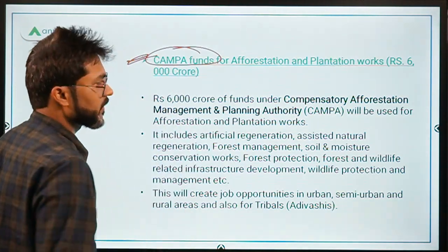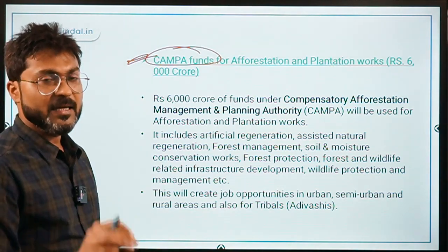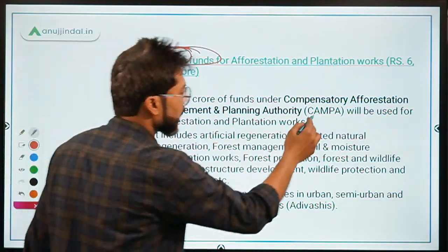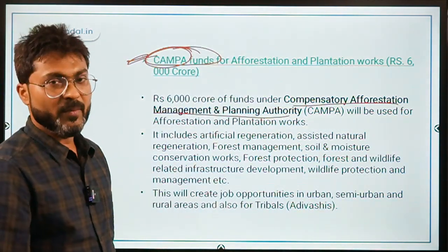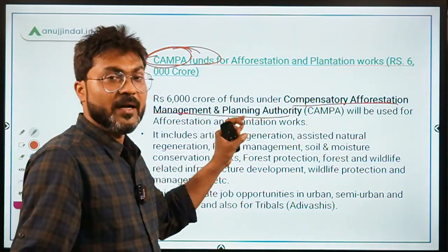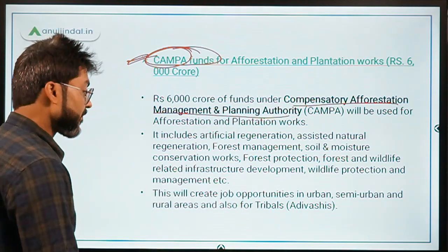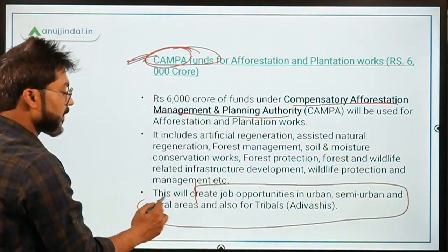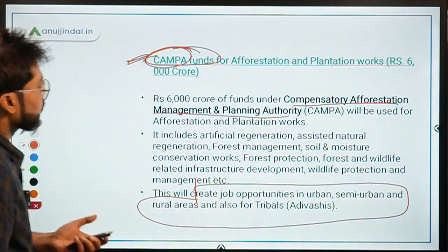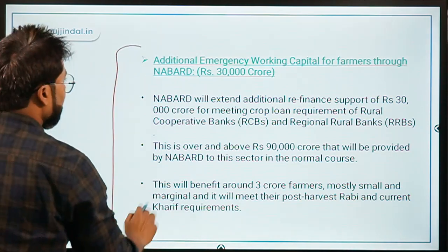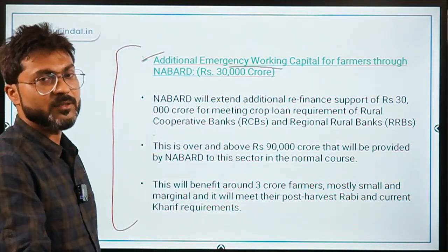For CAMPA (Compensatory Afforestation Management and Planning Authority) funds for afforestation and plantation work, ₹6,000 crore was provided. This was estimated to create job opportunities in urban, semi-urban, rural, and tribal areas. Additionally, ₹30,000 crore additional emergency working capital was provided to NABARD for farmers to meet crop loan requirements of rural cooperative banks and regional rural banks.